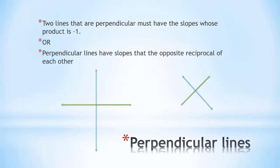We also have perpendicular lines. What's special about perpendicular lines? Two lines that are perpendicular must have slopes whose product is -1, or you may have also learned this as that perpendicular lines have slopes that are opposite reciprocals of each other.